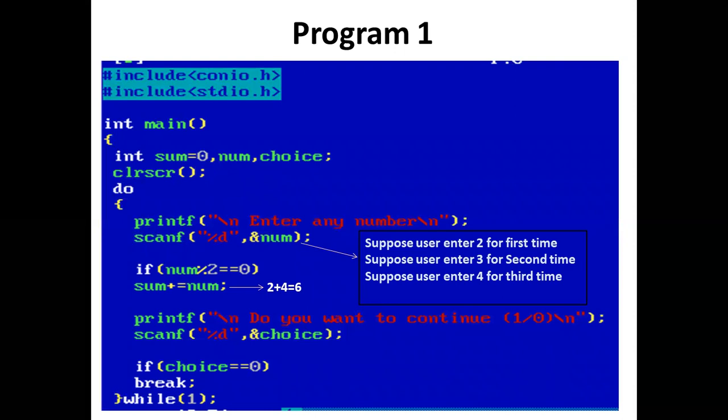So control again enters the do-while loop. The printf statement prints 'Enter any number.' The user enters 3. Now we have an if statement — condition: 3 mod 2 equal to 0, which is false. So control comes out of the if block. And the printf statement prints 'Do you want to continue? Press 1 or 0?' The user presses 1.